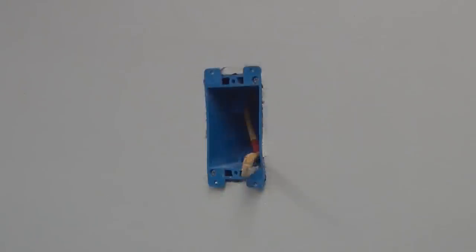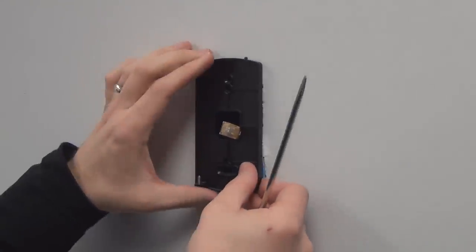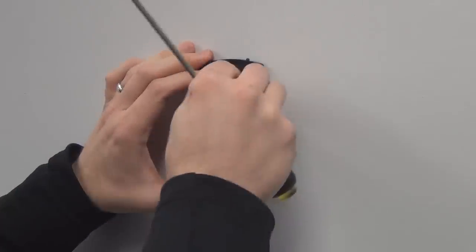Next we are going to install the digital wall sensor. We have already run the Ethernet patch cable from the VAV terminal to the electrical box. Mount the sensor backplate on the electrical box, passing the cable through the middle of the backplate.